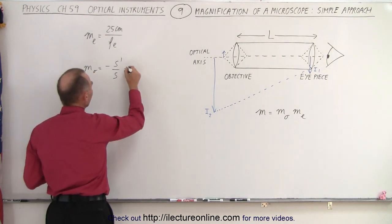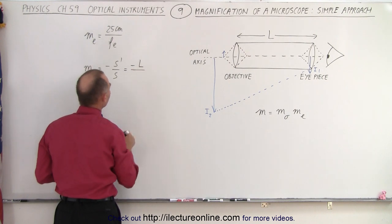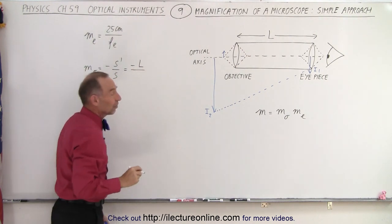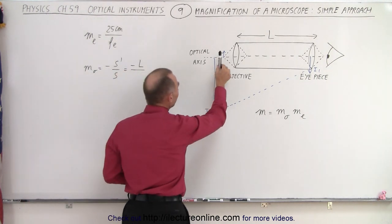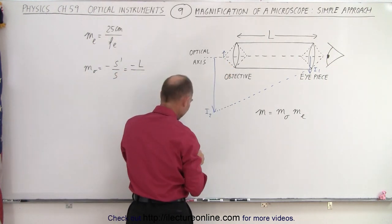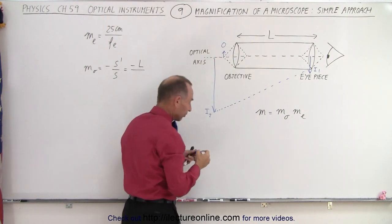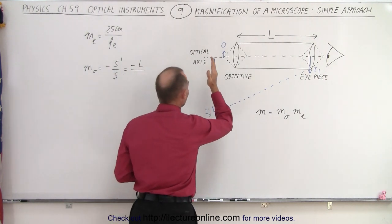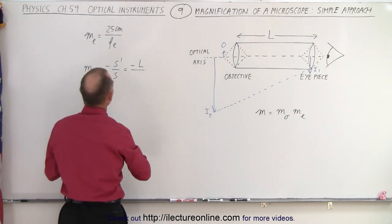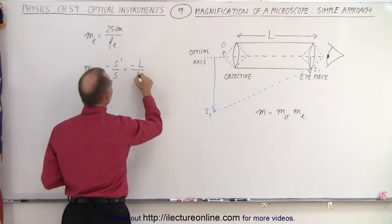So we write the objective magnification as minus the length of the microscope divided by the object distance. Where is the object distance? Typically, to be exact, we place the object — let me put an O there for object — just slightly in front of the focal point. But for simplicity, we're going to put it right at the focal point, so S is going to be the focal length of the objective.